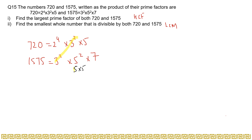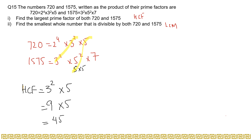We can write 5 squared as 5 multiplied by 5, which means 5 is common in both numbers as well. So we highlight 3 squared and 5 as the common factors. Other than these, there are no other common factors. Therefore, HCF equals 3 squared multiplied by 5, which is 9 times 5, giving us 45. So the HCF of 720 and 1575 is 45.